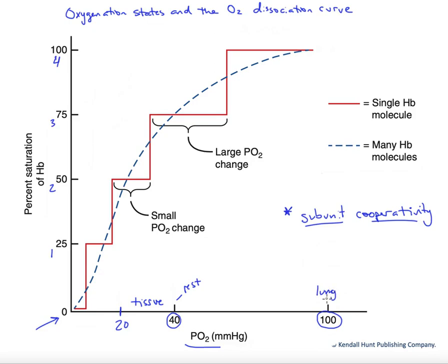What we find is that the stepwise increase in percent saturation is not linear. That is due to what we call subunit cooperativity. The hemoglobin molecule has four subunits, and they cooperate. This is a form of allosteric modulation, where the binding of oxygen at one site affects the binding of oxygen at the other sites.